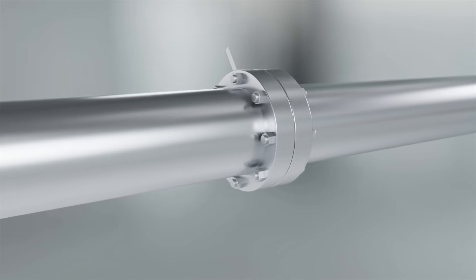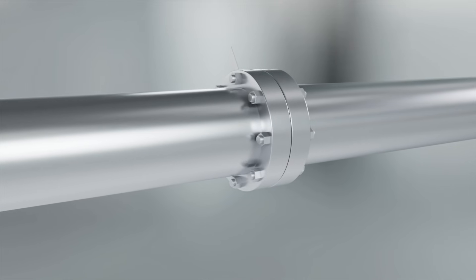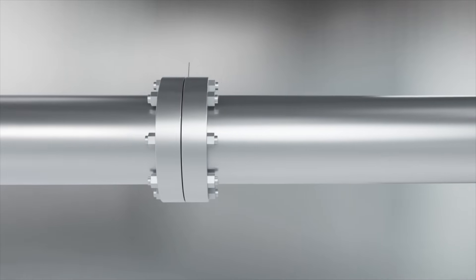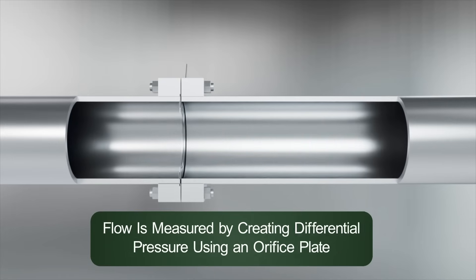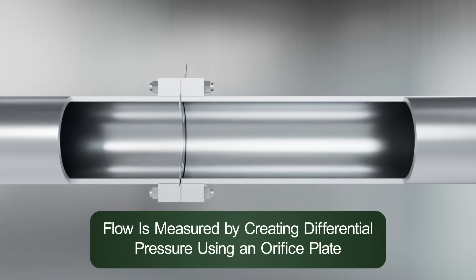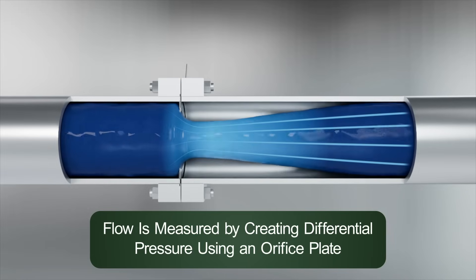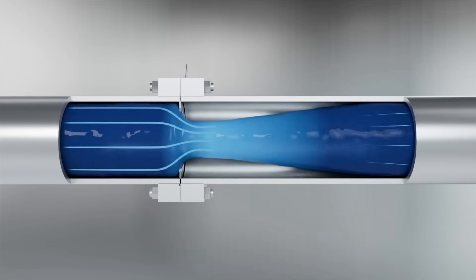There is an ongoing requirement to measure and control flow rates of liquids and gases in most every process. Although there are several technologies now available to measure flow, the oldest and still most common way for flow measurement is to create differential pressure across an obstruction in the piping using an orifice plate.